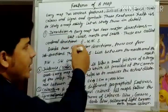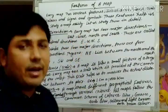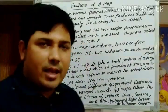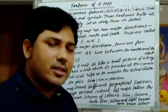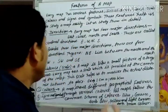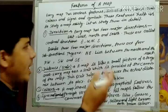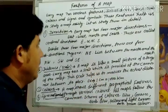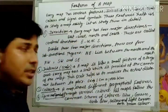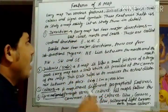Let us explain them one by one. The features are: first, direction; second, scale; third, colors; and fourth, signs and symbols. First is direction.